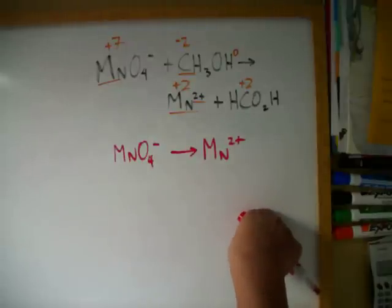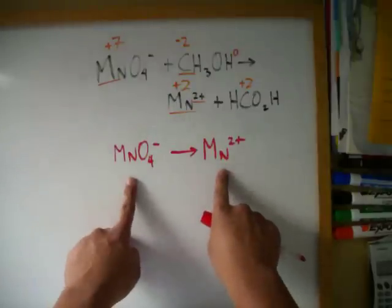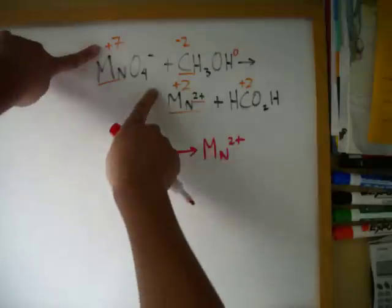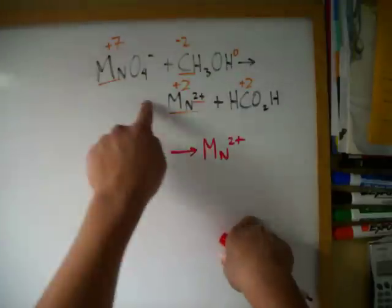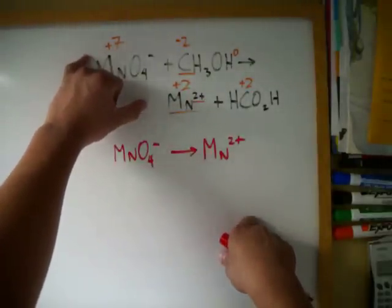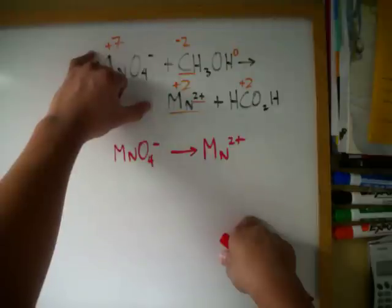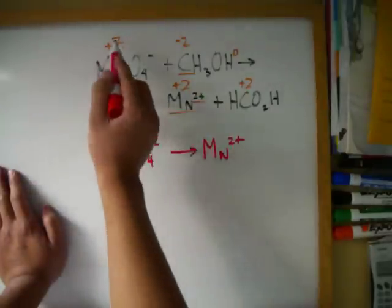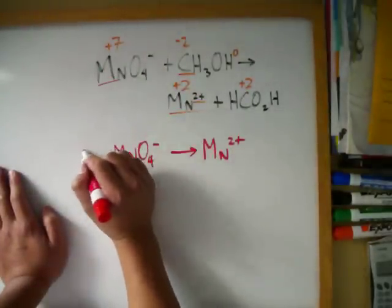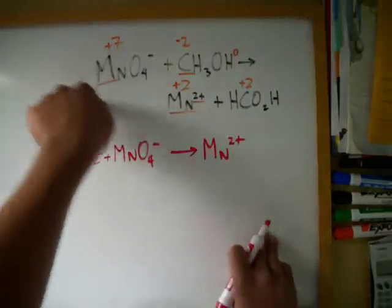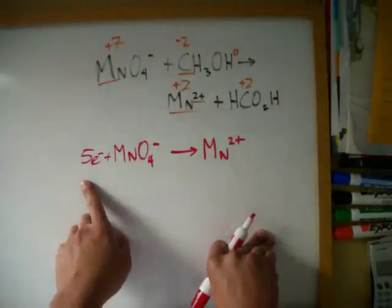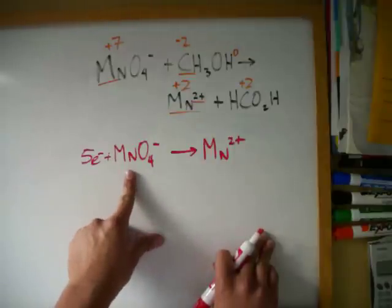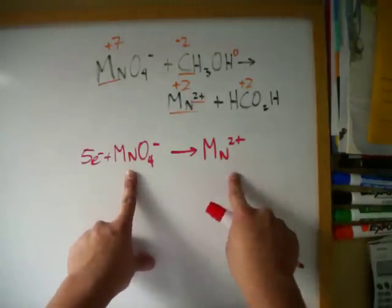The next thing is to balance the charges of the elements using electrons. There's a plus seven charge on this side and a plus two charge on this side. Seven is greater than two by five, so we add five electrons. Check it: seven minus five is two, so the charge of Mn on this side is two — and it's also two on this side.